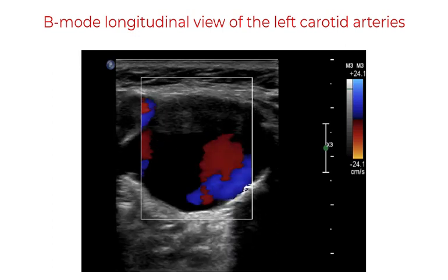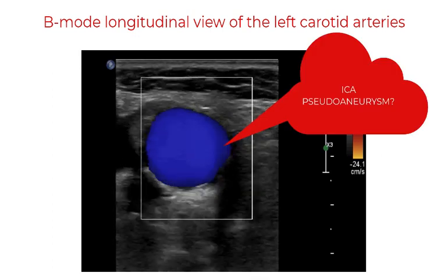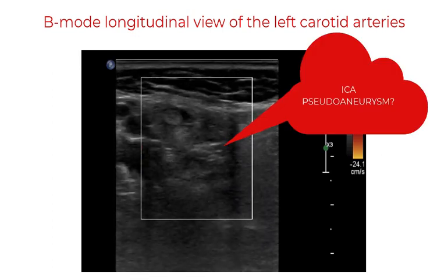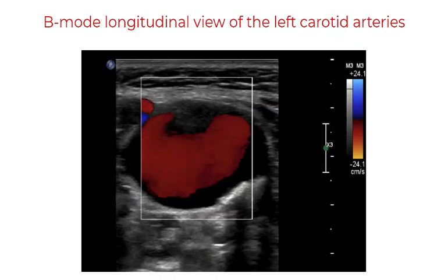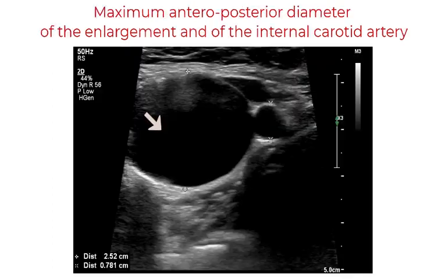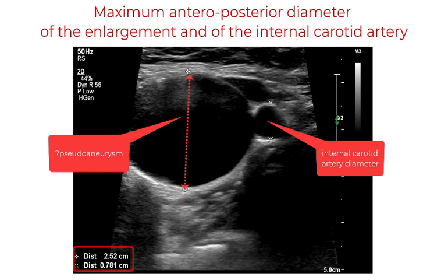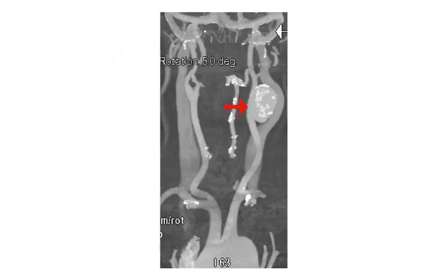This would highly be suggestive of a pseudo-aneurysm of the internal carotid artery. As we can see, flow is going from the internal carotid artery into this anechoic region. By measuring the size of this anechoic region, we can see that the maximum diameter is 2.5 cm.